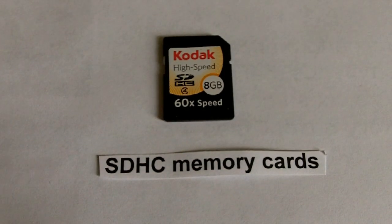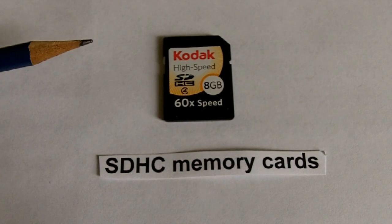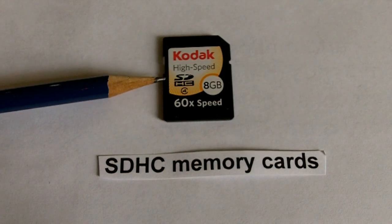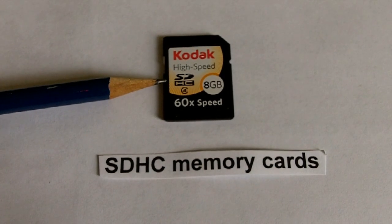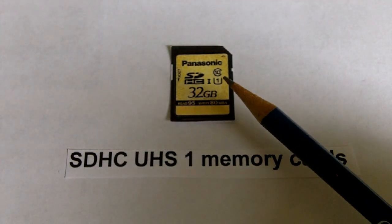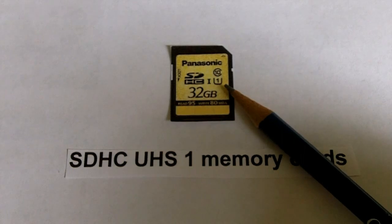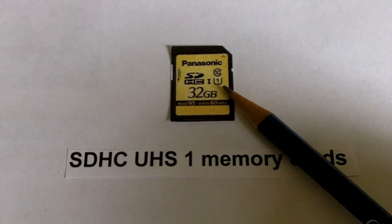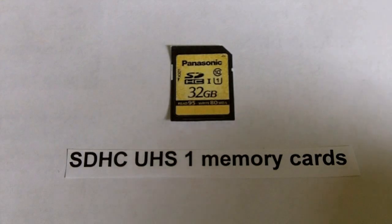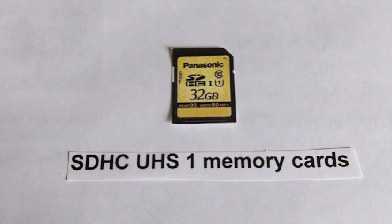The second subgrouping of memory cards are SDHC-type memory cards. The HC, which is shown here on the label, stands for high capacity. The third subcategory are SDHC ultra-high-speed memory cards. The U for ultra is shown right here. This ultra-high-speed class 1 type of memory card is also compatible with Kodak pocket video cameras.